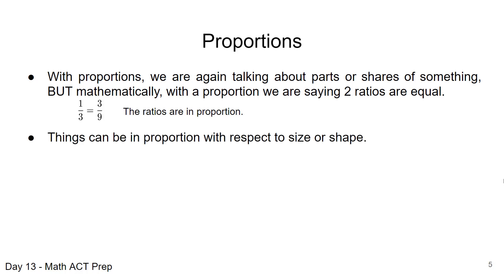Things can be in proportion with respect to size or shape. For example, if we have a particular shape, let's say a triangle, and if we say two different triangles are in proportion, then each of the three legs of the triangle are each going to be in proportion to one another of the two triangles.